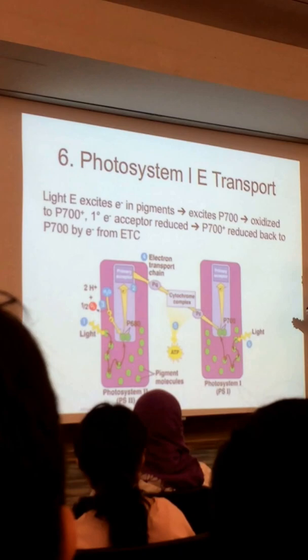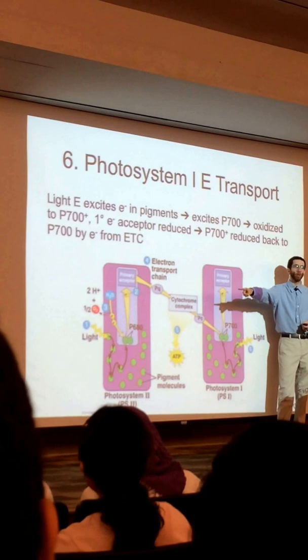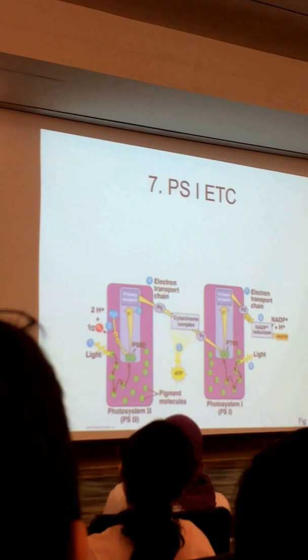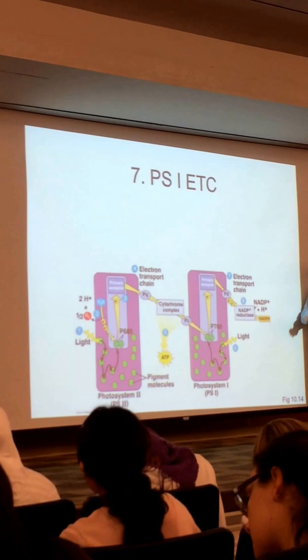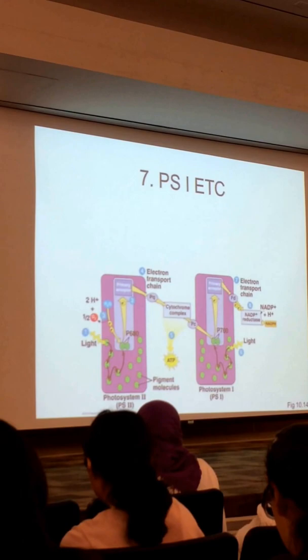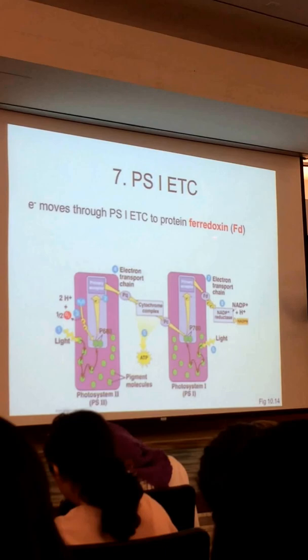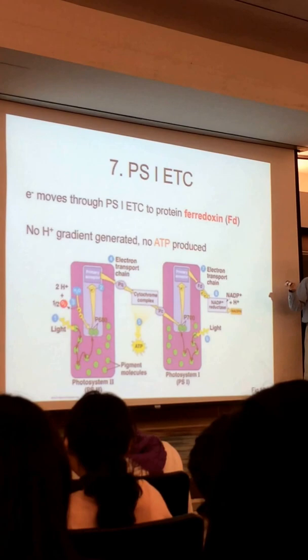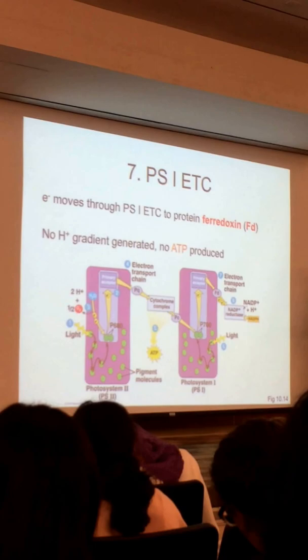This is what we call linear electron flow — the electron starts in photosystem II and ends up in photosystem I. There is a second electron transport chain in photosystem I, but it's a little different: it's not used to pump protons and therefore not used to make ATP. It's a different set of molecules. The electron ends up at a molecule called ferredoxin, abbreviated FD. There is no cytochrome complex on this side and no ATP being made.